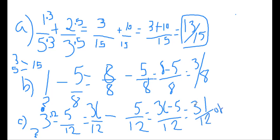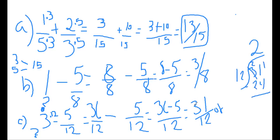If I need to express that as a mixed number, I take 12 divided into 31. That goes two times for 24. Then when I subtract, 31 minus 24 gives me seven — so the answer is two and seven over 12. Final answer.